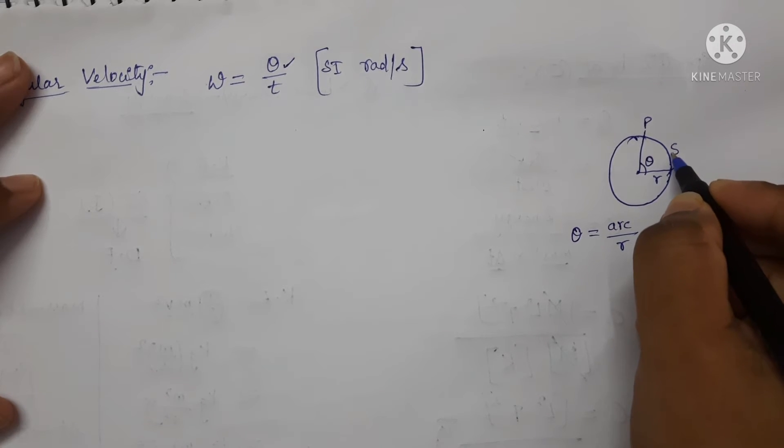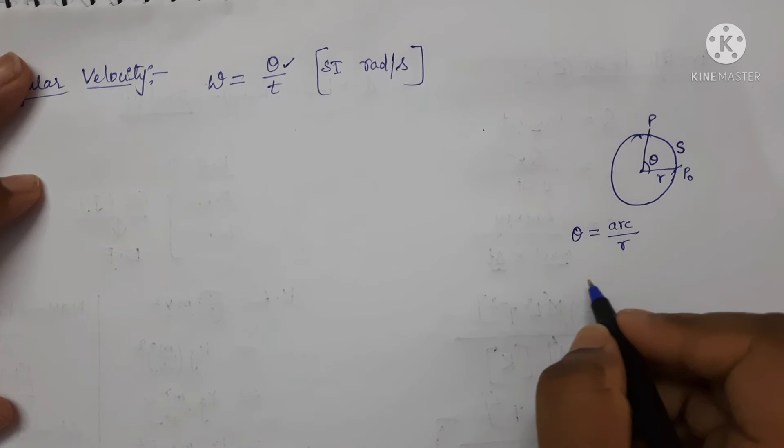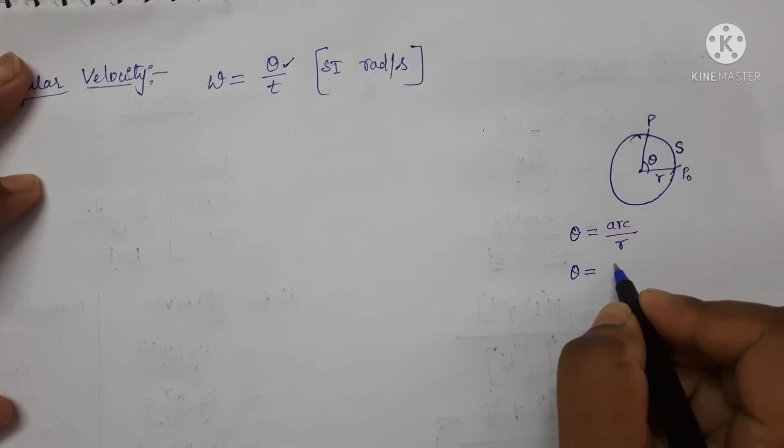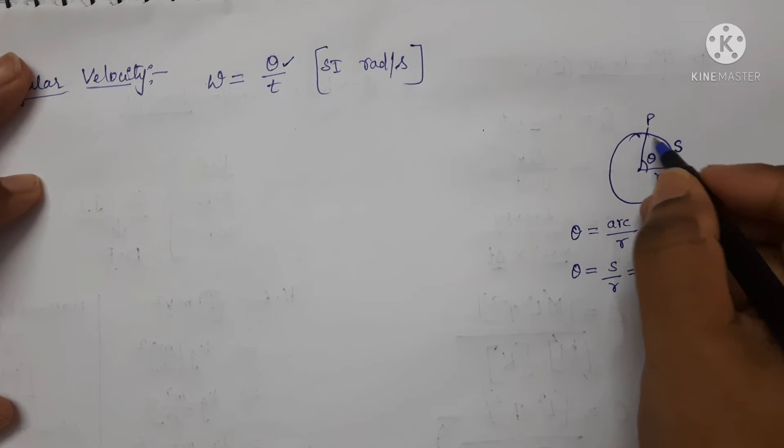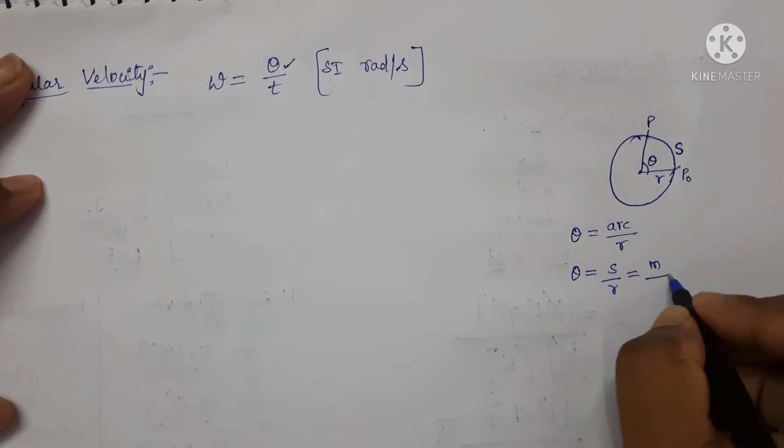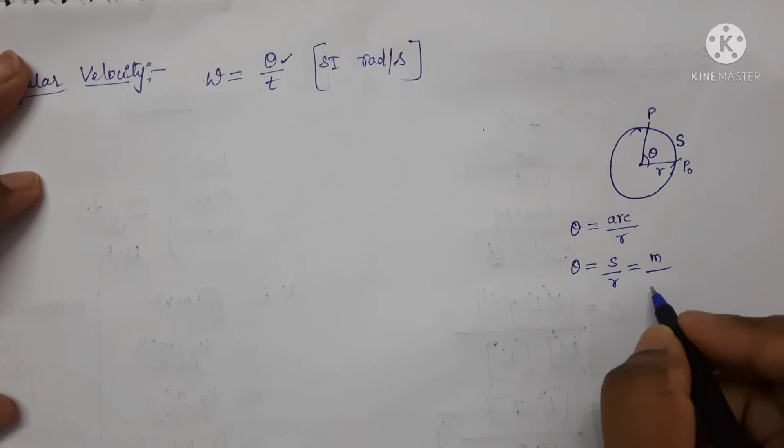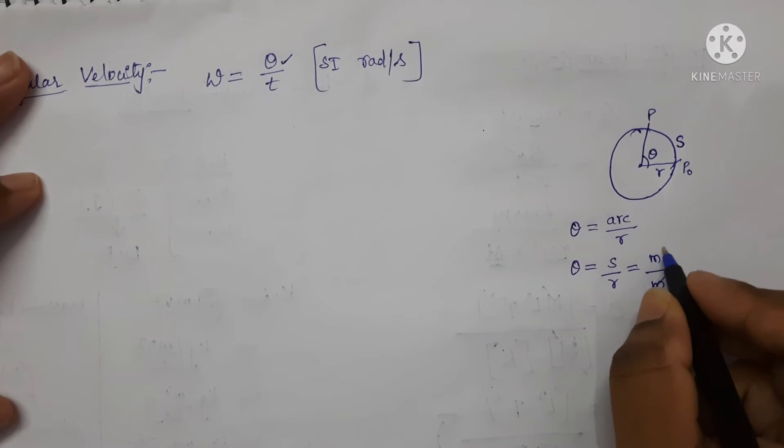Here arc is nothing but length. Arc length is considered as S. So theta is equal to S by R. Now, here arc length is measured in terms of meter and radius is also measured in terms of meter. So meter, meter will be cancelled.